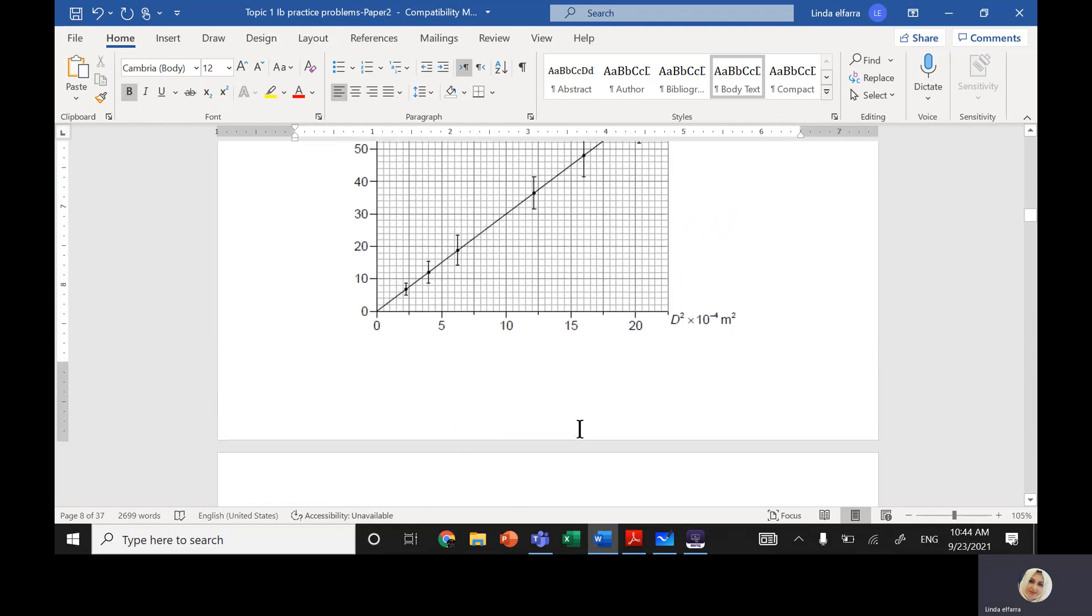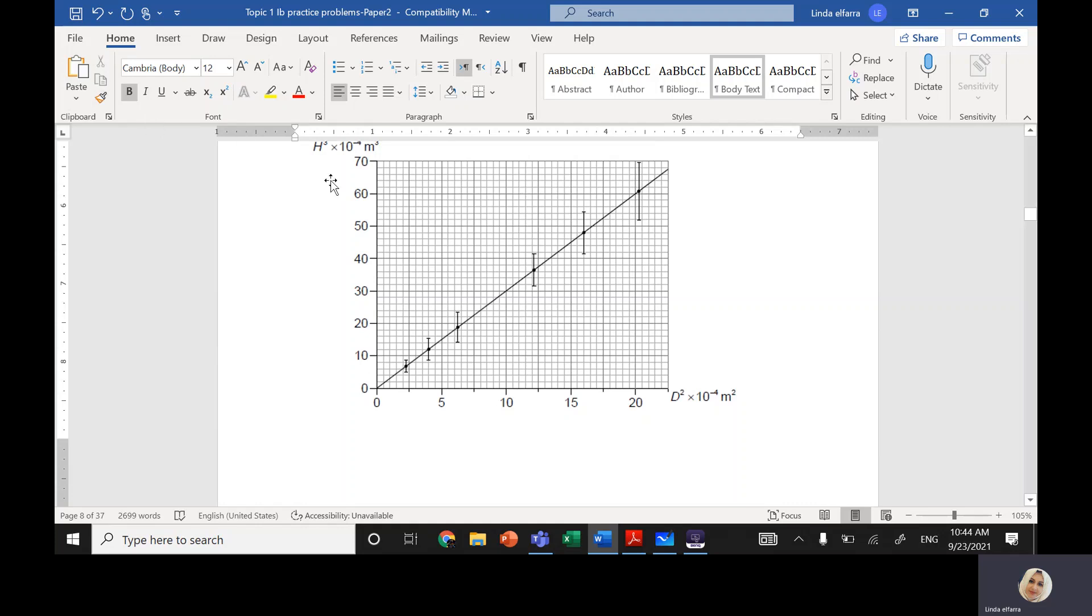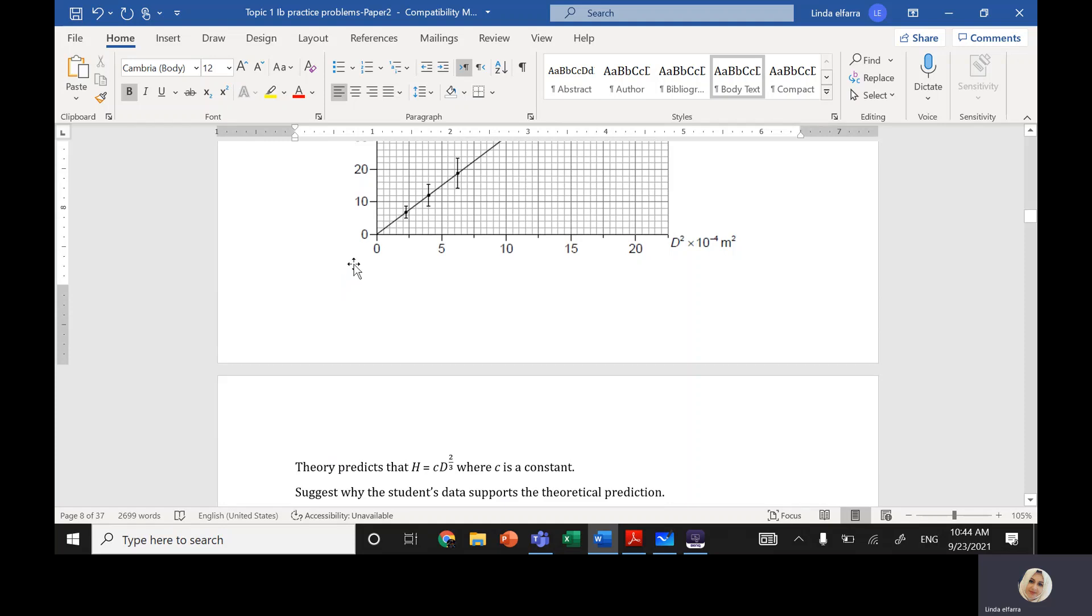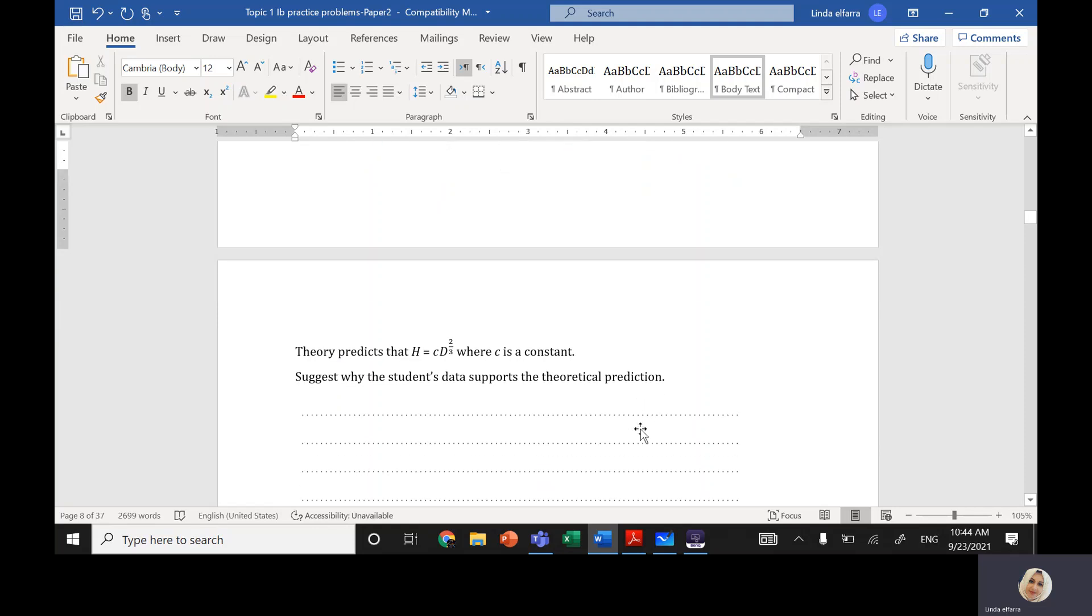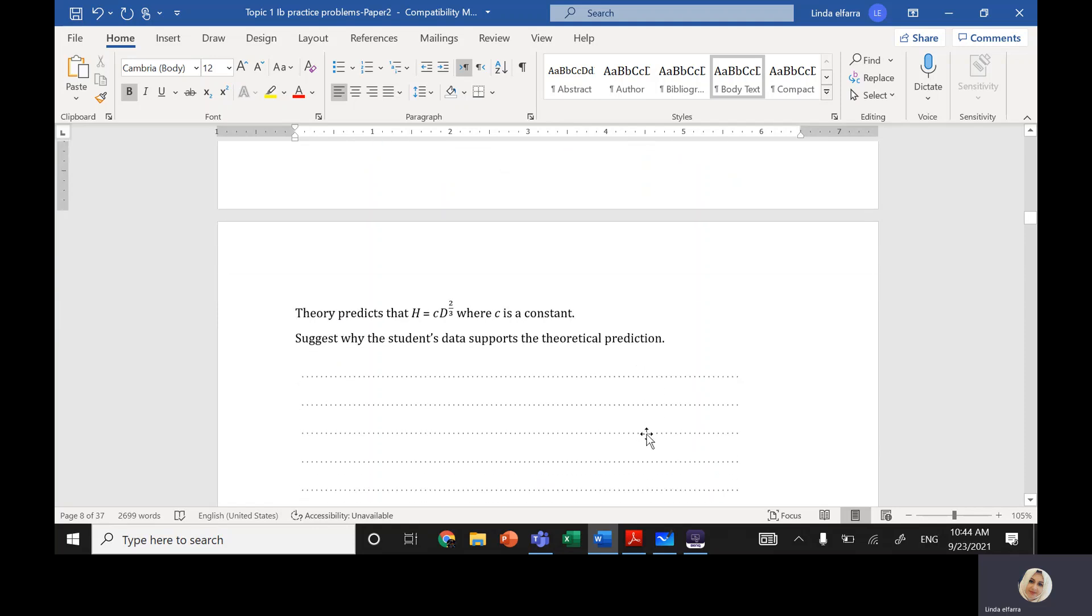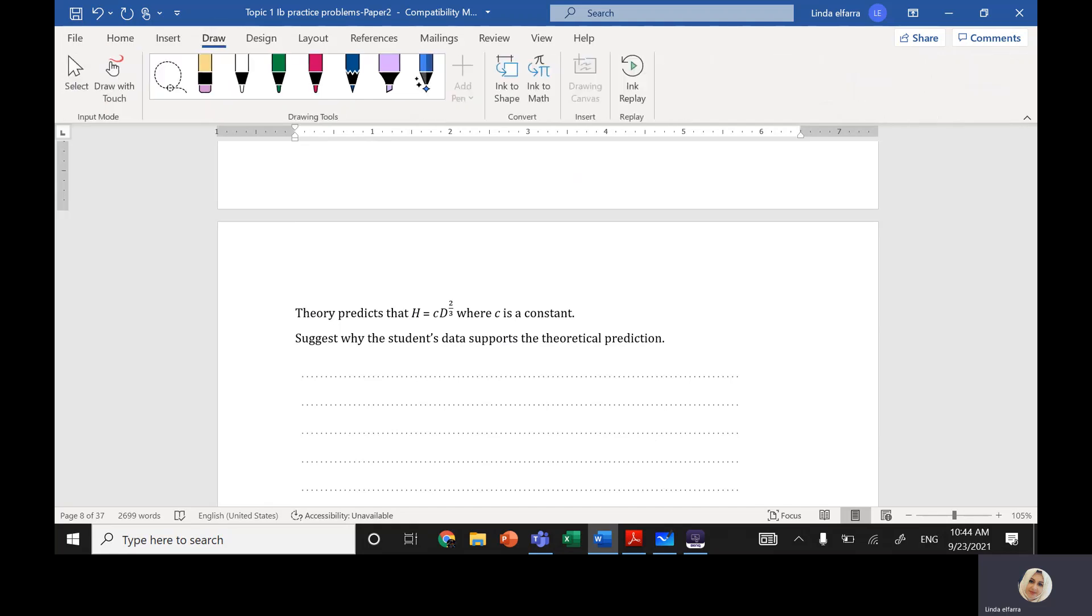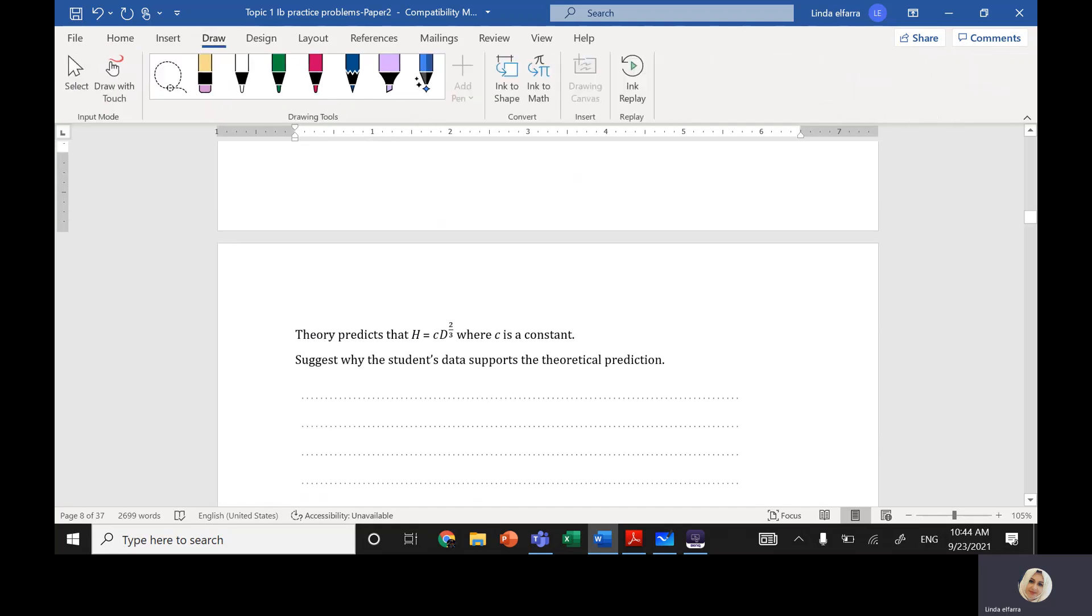As you notice here, we have a relationship in the diagram between h cubed versus d squared, and I have a straight line that passes through the origin. That means I have a relationship between the height of the cylinder cubed, directly proportional with the diameter of the cylinder squared. So this formula is correct.